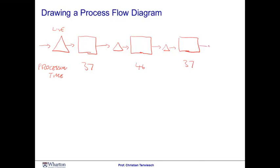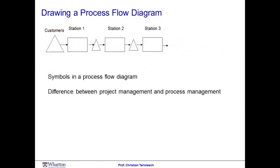Finally, the customer is served and can happily leave the restaurant. I've redrawn this process flow diagram in PowerPoint to get rid of my handwriting. To reiterate the symbols: triangles stand for flow units waiting, arrows capture the flow of flow units, and boxes capture the resources carrying out the activities in the process flow.